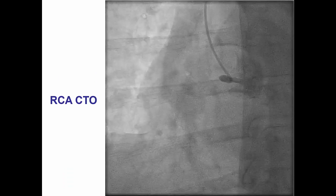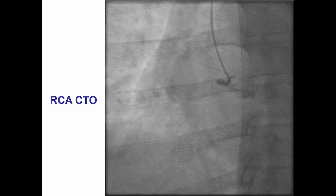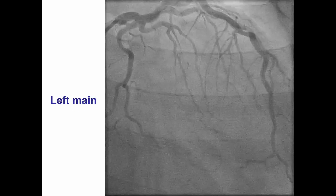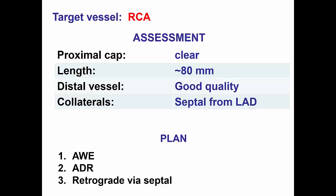The patient had an ostial right coronary artery CTO without significant disease in the left main system and retrograde filling via septal collaterals. There is a clear proximal cap; however, it is a very long occlusion. The distal vessel is of good quality with reconstitution of the distal bifurcation, and there are septals from the LAD.